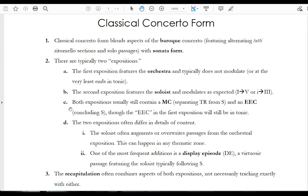So both expositions, both the first and the second one, will still usually contain an MC. As usual, that MC will serve as the divider between the first half of the exposition and the second half of the exposition. In other words, between the end of TR and the beginning of S. And both expositions will still have a perfect authentic cadence that concludes S. So we'll call both of those an EEC.